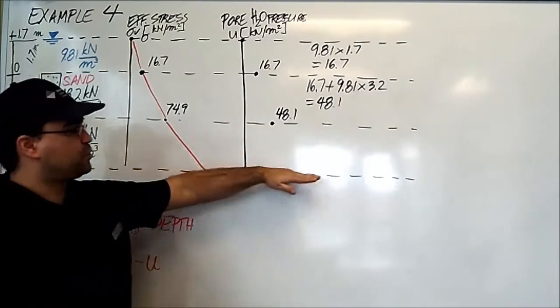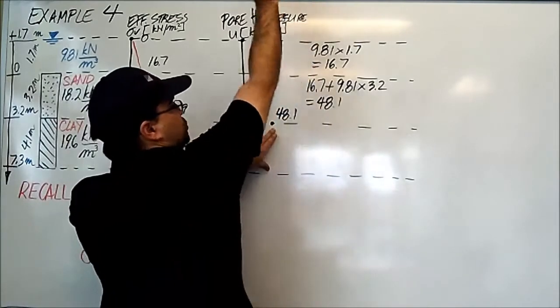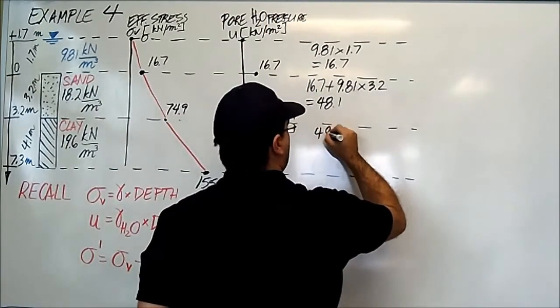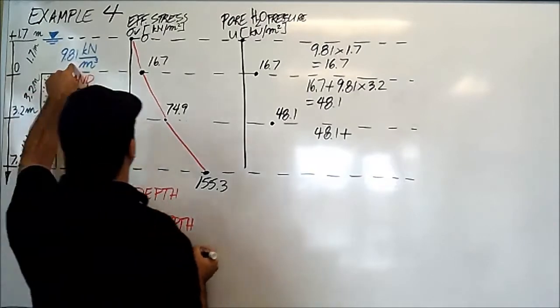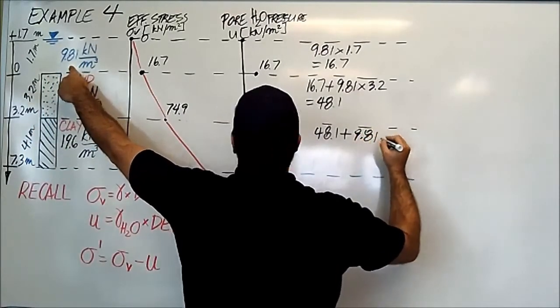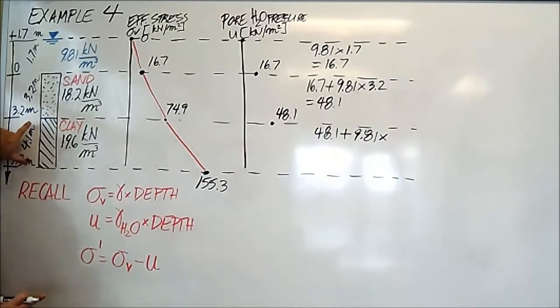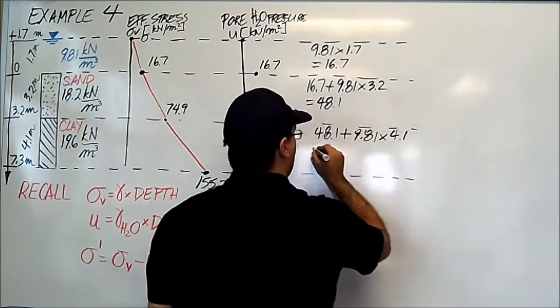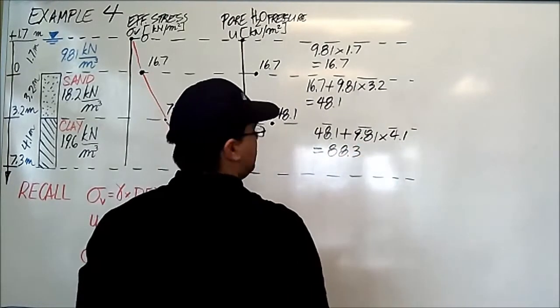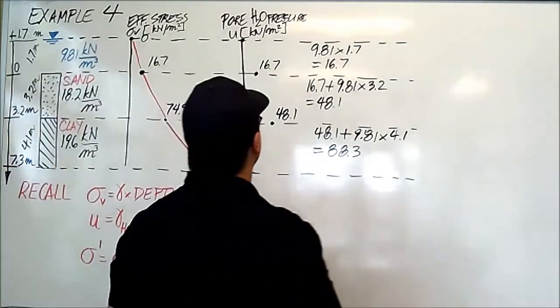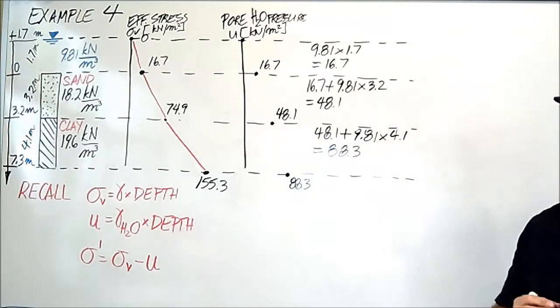Let's calculate then the pore water pressure at this final interface, the bottom of the borehole. We have to first add the pore pressure from all above, which is 48.1, plus the density of water, 9.81 kilonewtons per cubic meter, times this depth, which is 4.1 meters. All of this is equal to 88.3.